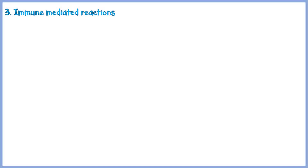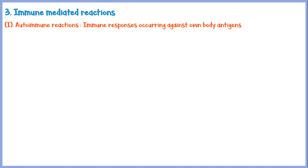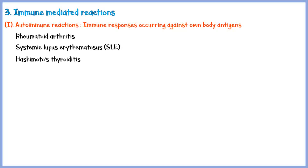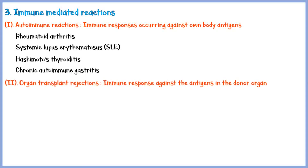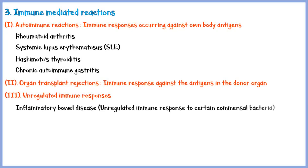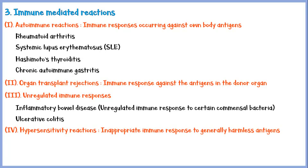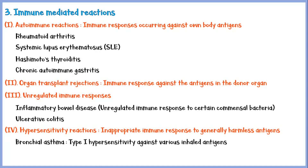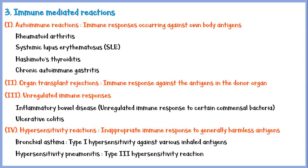Another cause of chronic inflammation is immune-mediated reactions. These reactions can be categorized into several sub-types, including autoimmune reactions, where an immune response occurs against our own body antigens — such as rheumatoid arthritis, systemic lupus erythematosus, Hashimoto's thyroiditis, and chronic autoimmune gastritis. Organ transplant rejections, where the immune response occurs against antigens of the donor organ. Unregulated immune responses against a particular organism, such as inflammatory bowel disease and ulcerative colitis. And hypersensitivity reactions, which are inappropriate immune responses to a generally harmless antigen, such as chronic bronchial asthma — a type 1 hypersensitivity reaction — and hypersensitivity pneumonitis, a type 3 hypersensitivity reaction.